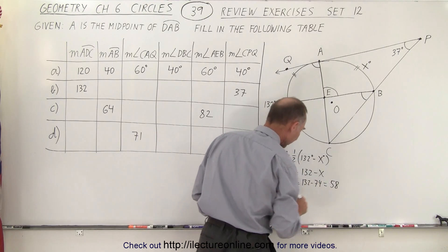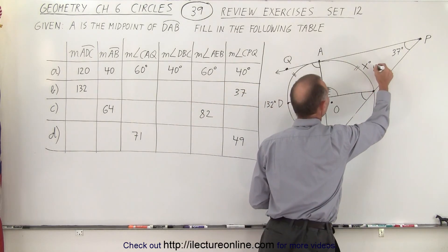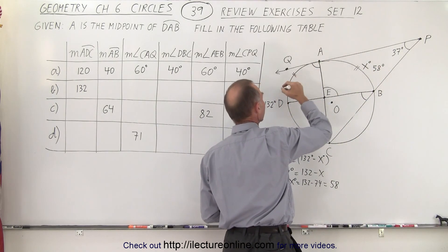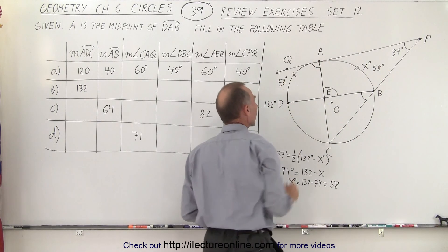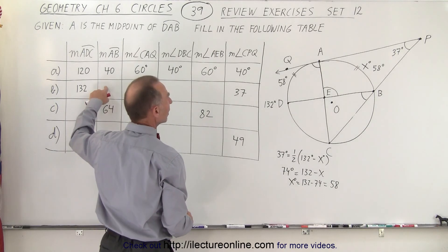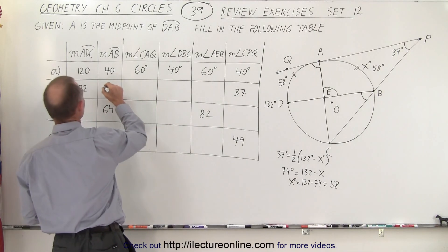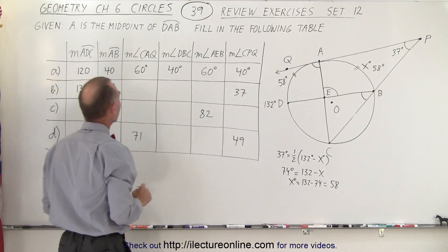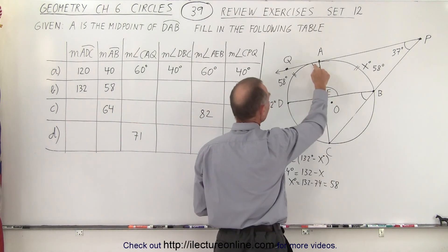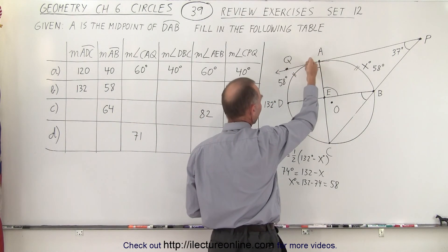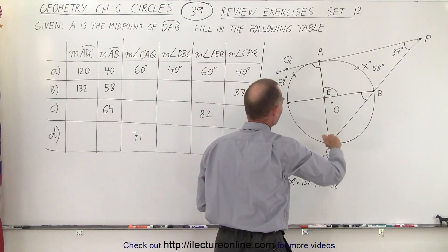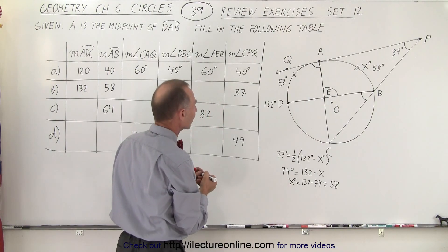So this now becomes 58 degrees, which means since this is the same arc length, this is 58 degrees as well. So the measure from A to B is 58 degrees. The measure from C to A to Q would be half the measure of 132, so half of 132 would be 66 degrees.